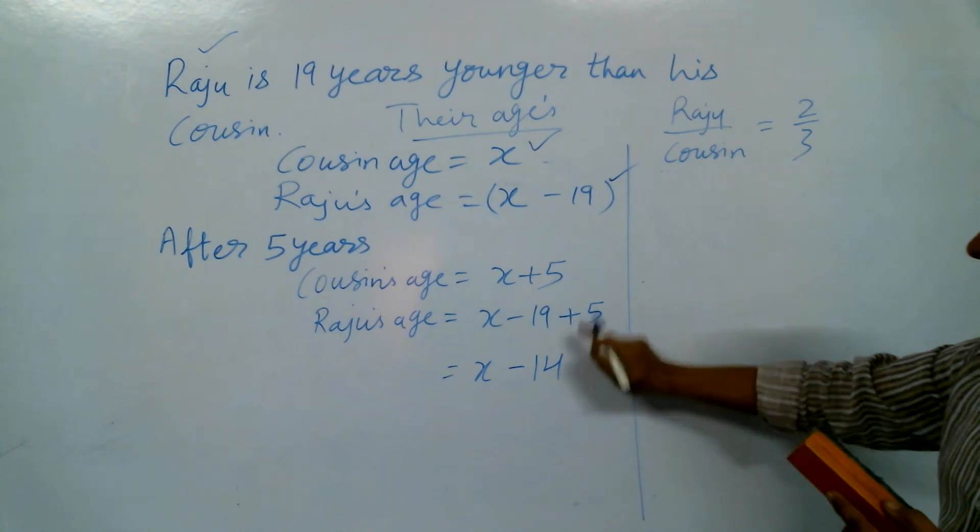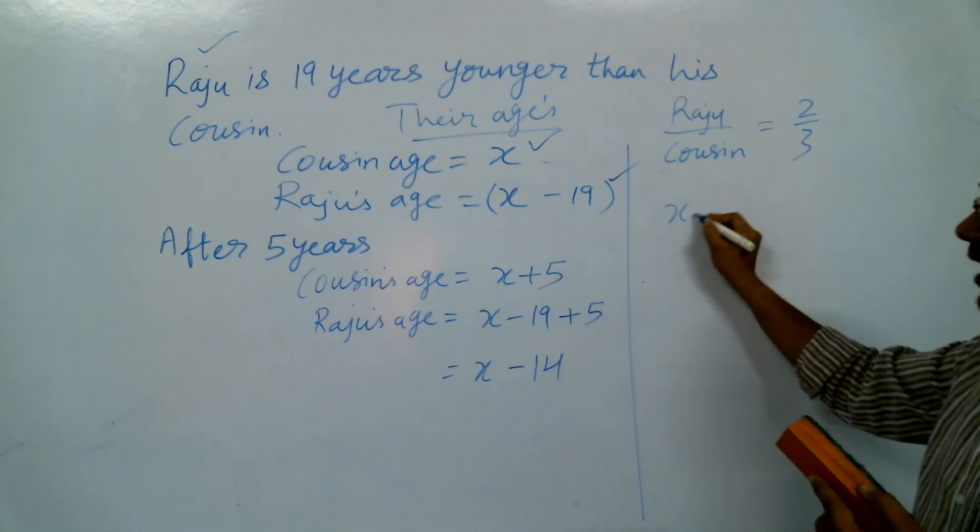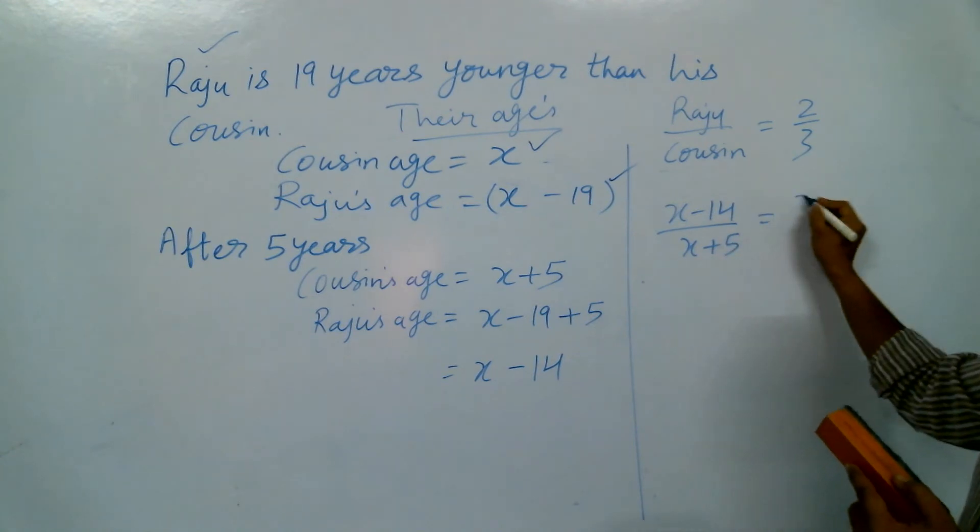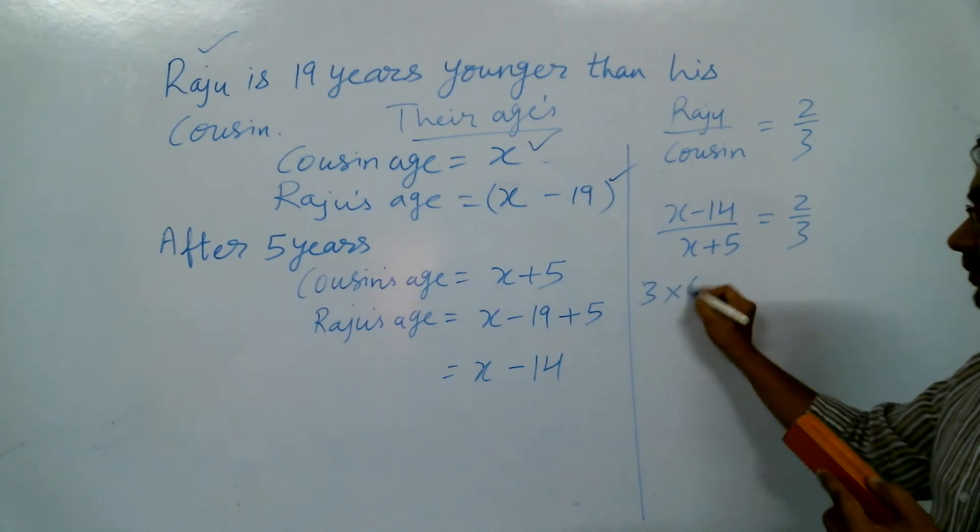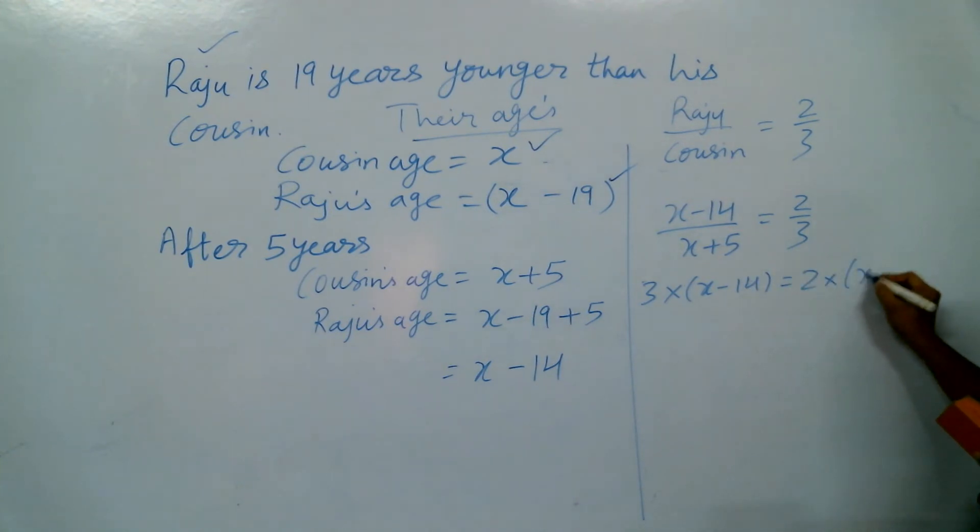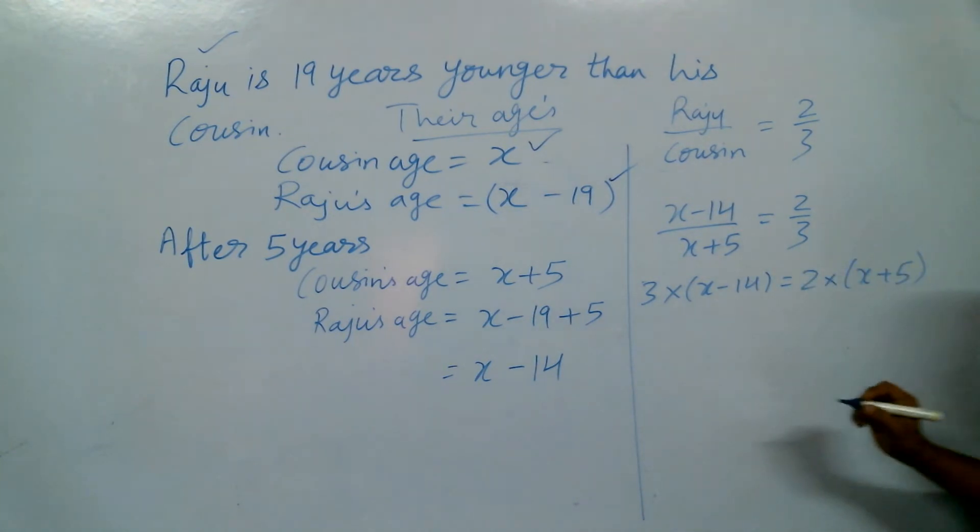So Raju's age we need to find: x minus 14, and the cousin is x plus 5, equals 2 by 3. When we cross multiply, we get this equation.